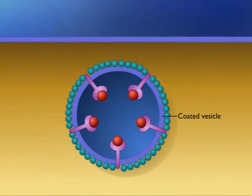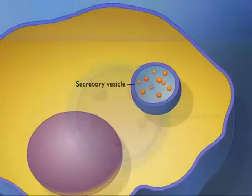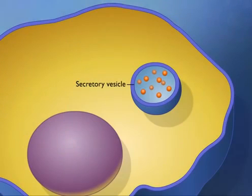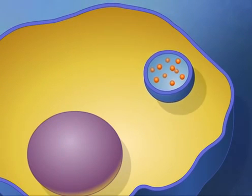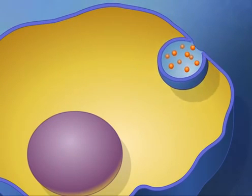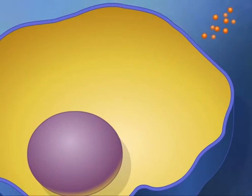Exocytosis is the reverse of endocytosis. This process results in the discharge of material from vesicles at the cell surface to the outside of the cell.